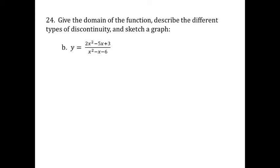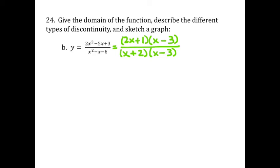Let's look at one more. I'm going to factor my numerator and denominator. The numerator factors as 2x plus 1 times x minus 3. In the denominator, I've got x plus 2 times x minus 3. My denominator cannot be equal to 0, so for my domain: all reals, but x cannot equal negative 2 from the first factor, and x cannot equal positive 3 from the second factor in the denominator.